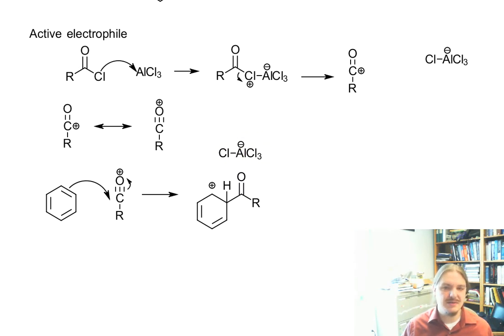And we do use the chloroaluminate anion as the base. So it's going to come take away this extra proton, just like we've been using it for other variations. And now we get our ketone. We get hydrochloric acid and we regenerate aluminum trichloride.